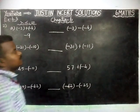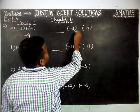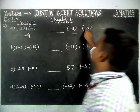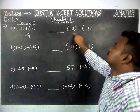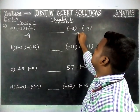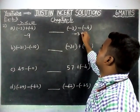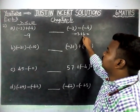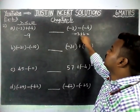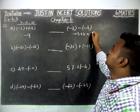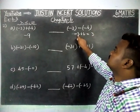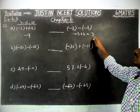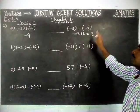Then we will check the right hand side. This is minus 3, minus of minus 6. So, minus 3, minus into minus gives plus 6. Signs are different, so we have to find the difference. 6 minus 3 is equal to 3. Since 6 is the greatest number, the answer is plus 3.